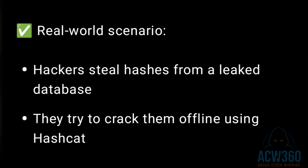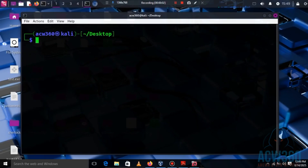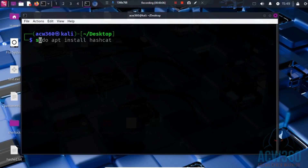In real-world scenarios, hackers steal hashes from a leaked database and try to crack them offline using Hashcat. To follow along, you need Kali Linux or any system with Hashcat installed. We also need a hash to crack and a wordlist like rockyou.txt. If you are using Ubuntu or Debian, you can install Hashcat by typing this command.